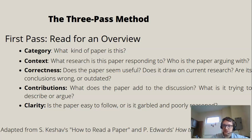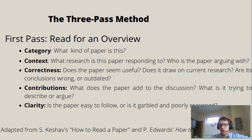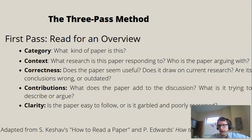You're answering five basic questions according to Keshav. First, category: what kind of paper is this — is it a literature review, a quantitative study, a qualitative study? Next, context — the 'they say' part: who is the paper responding to, who is it arguing with, whose research is the paper building on, what's the paper trying to measure or describe, what populations is the paper dealing with? Then correctness: does the paper draw on strong current research, is it relevant to your topic, is the reasoning fallacious or are there obvious flaws?